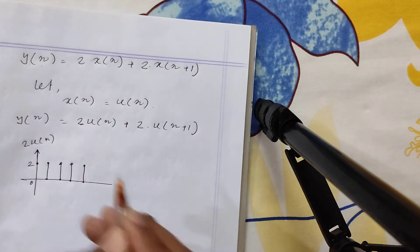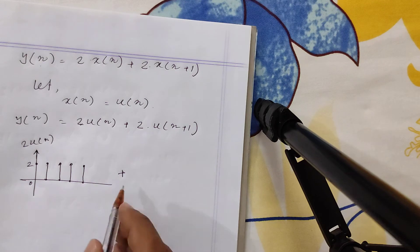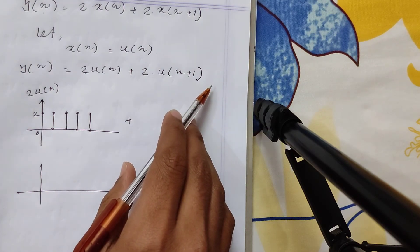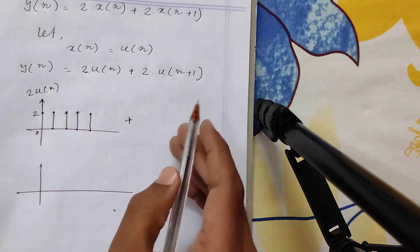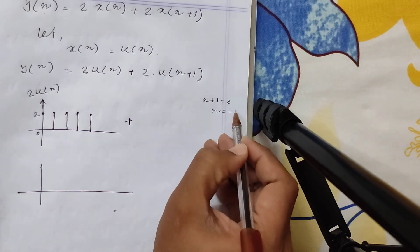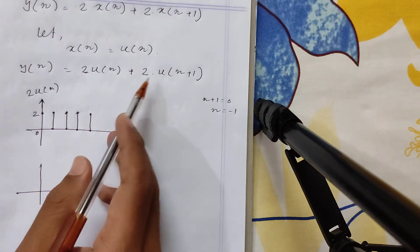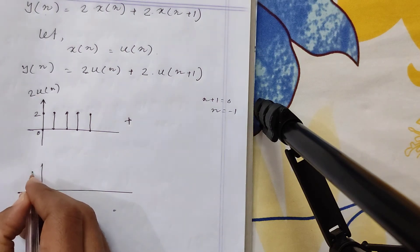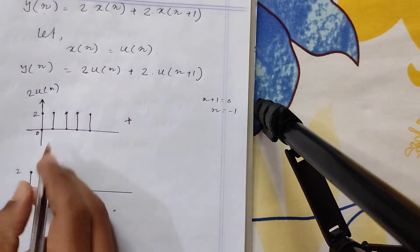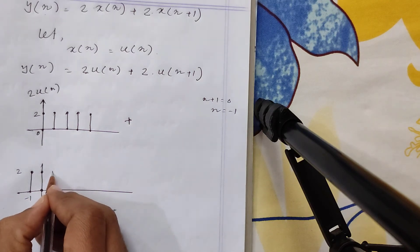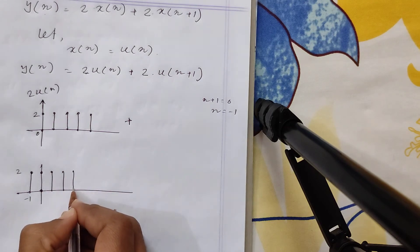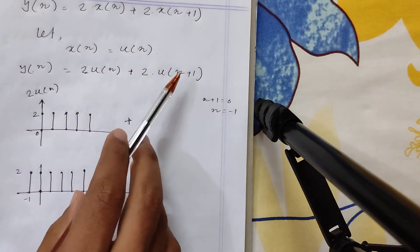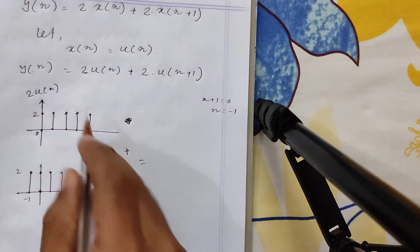Let the input be u[n] (unit step signal). Then y[n] = 2u[n] + 2u[n+1]. For u[n+1]: n+1 is a left shift by one. When n+1=0, n=−1, so u[n+1] starts at n=−1. So at n=−1 the amplitude is 1, at n=0 it is 1, and so on. Then y[n] = 2u[n] + 2u[n+1]. Adding these two signals together gives the output.